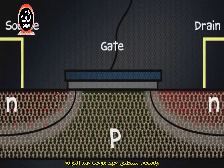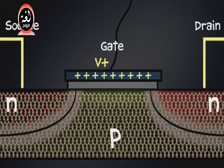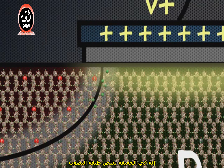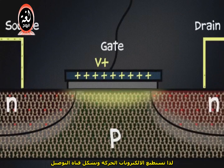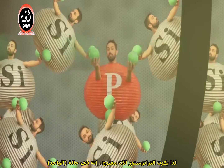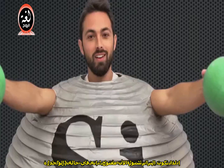So right now the transistor is off — it's like an open switch, in the zero state. To turn it on, you have to apply a small positive voltage to the gate. This attracts the electrons over and overcomes the repulsion from the depletion layer. It actually shrinks the depletion layer so that electrons can move through and form a conducting channel. So the transistor is now on — it's in the one state.